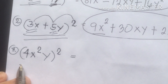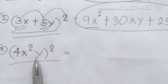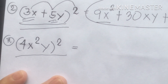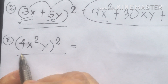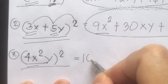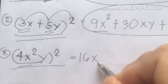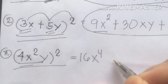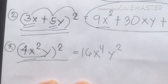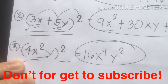Number three: (4x squared y) squared. This is the first term, so 4 times 4 is 16, x squared times x squared is x to the fourth, and y times y is y squared. The answer for the first term is 16x to the fourth y squared.